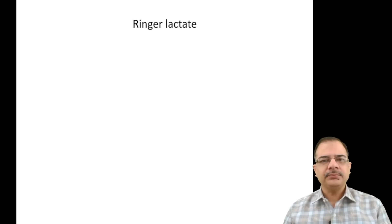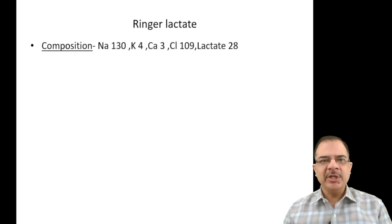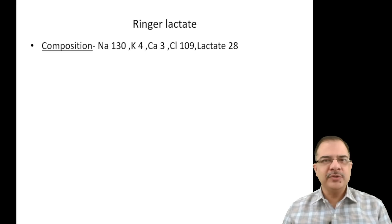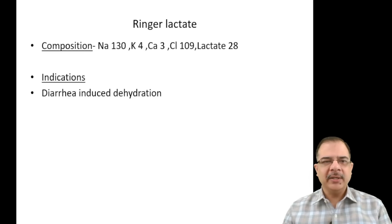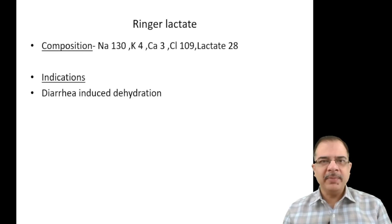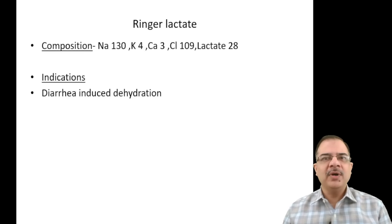Ringer lactate composition: sodium 130, potassium 4, calcium 3, chloride 109, and lactate 28 mEq/L. It is the most physiologically balanced IV fluid. Indications include diarrhea-induced dehydration, as it replaces the lost electrolytes. Lactate is converted in the liver to bicarbonate, making it a source of bicarb — ideal in cholera patients where bicarbonate is lost in diarrhea.